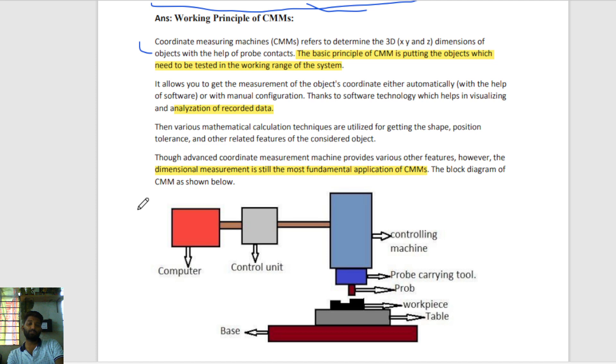But here we can measure all those dimensions with the help of a single system - that is Coordinate Measuring Machine. One machine can measure everything. It's computer controlled with software and control unit, and this CMM machine is connected. Here we are feeding the program for that.